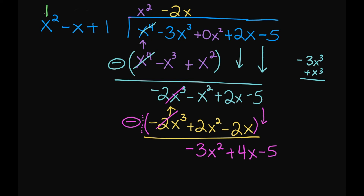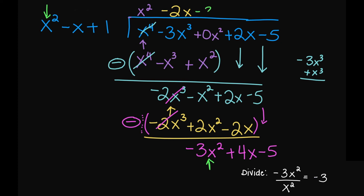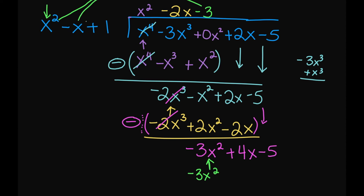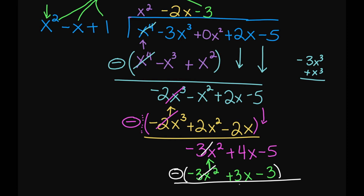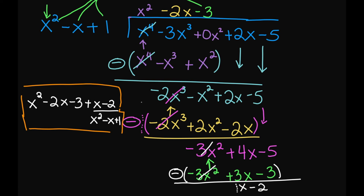What number do I need to multiply my x squared with to give us negative 3x squared? That's negative 3, because negative 3 times x squared gives negative 3x squared, negative 3 times negative x gives positive 3x, and negative 3 times 1 gives negative 3. Now subtract: negative 3x squared plus 3x squared cancels out. Then 4x minus 3x gives x, and negative 5 plus 3 gives negative 2. Since our remainder is x minus 2, we write our quotient, then our remainder over the divisor. This is your final answer.